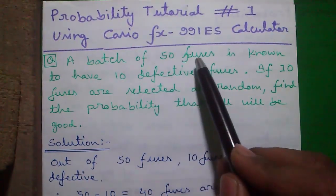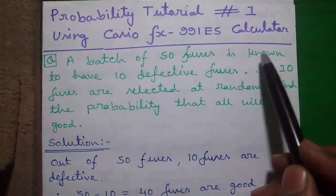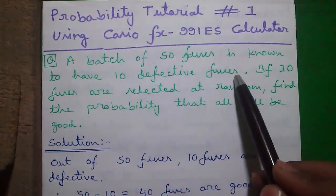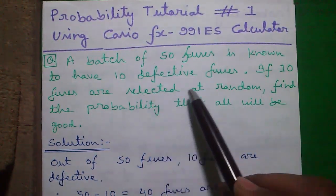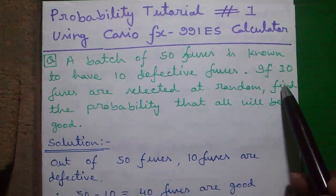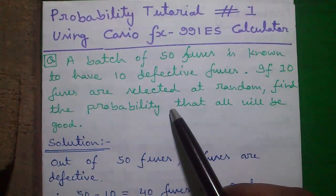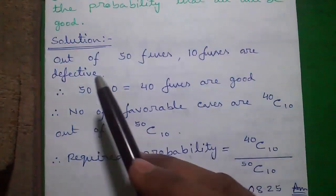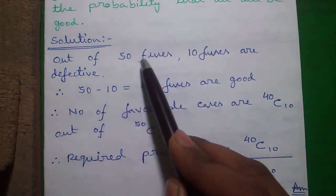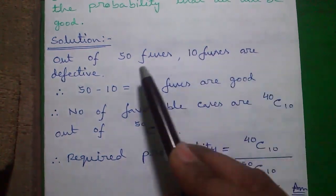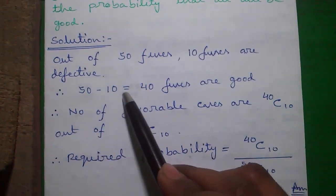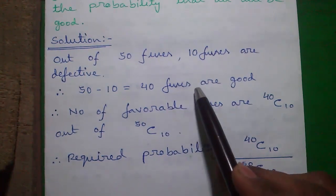A batch of 50 fuses is known to have 10 defective fuses. If 10 fuses are selected at random, find out the probability that all will be good. So here is our solution: out of 50 fuses, 10 fuses are defective. So 50 minus 10 equals 40 good fuses.